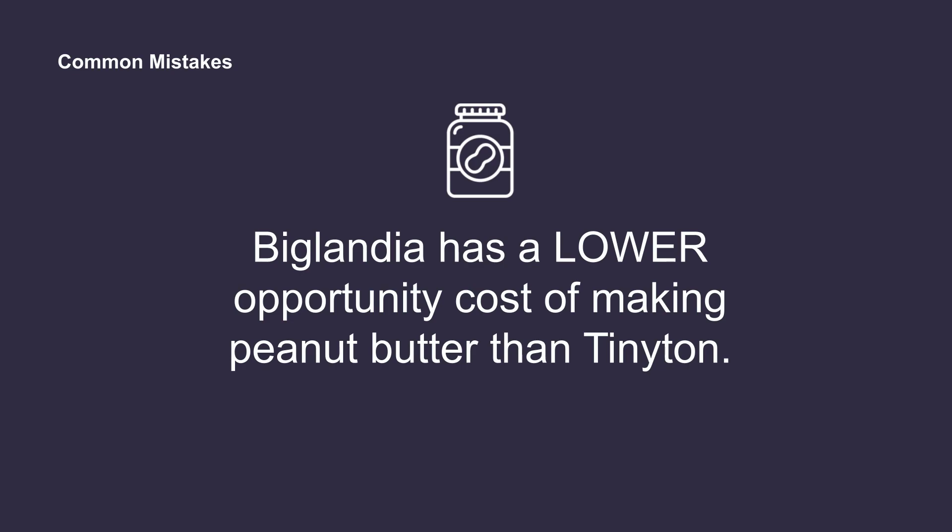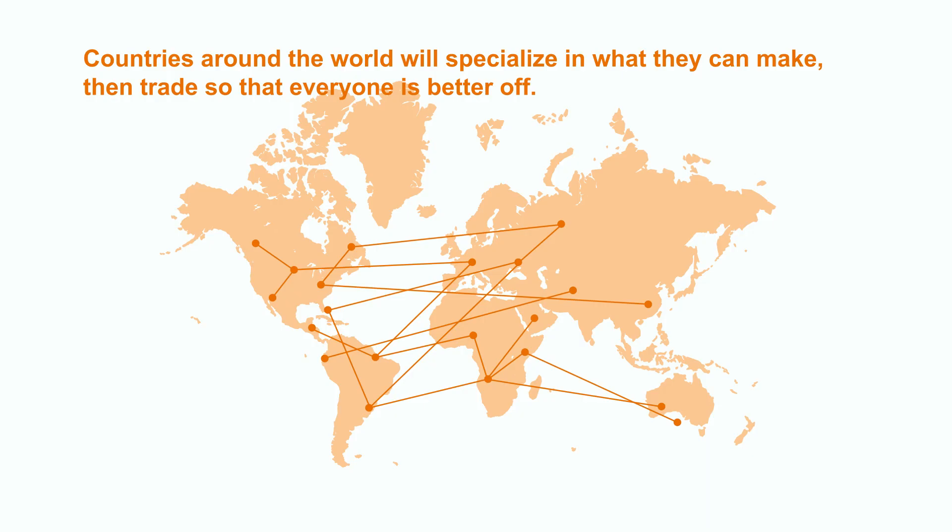So, even a big country like Biglandia can benefit from trading with a small country like Tinyton. You can start to see why comparative advantage is such a powerful real-world concept. Countries around the world will specialize in what they can make, then trade so that everyone is better off.